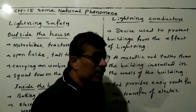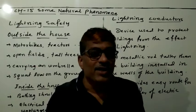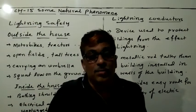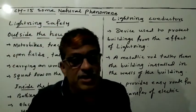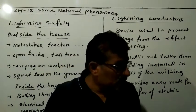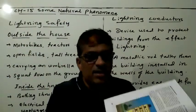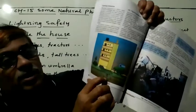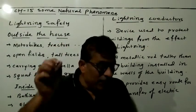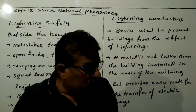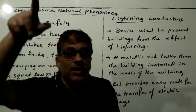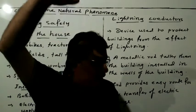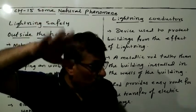Now we discuss lightning conductors. A lightning conductor is a device — an instrument — used to protect buildings from the effect of lightning. A metallic rod, taller than the building, is installed in the walls of the building during its construction. This arrangement must be planned during construction.